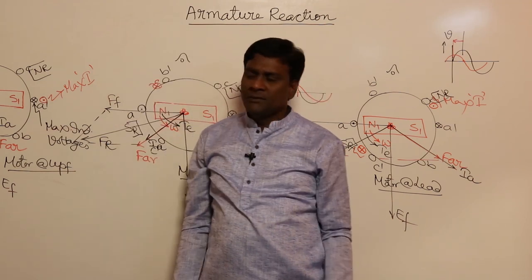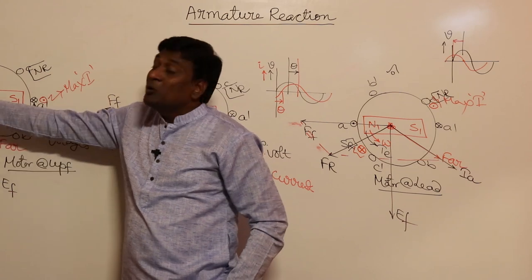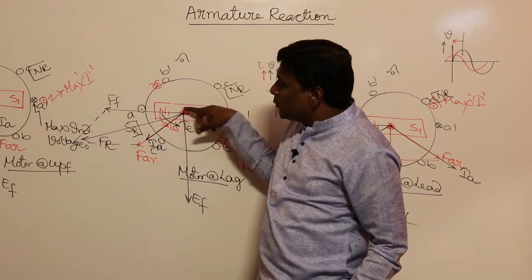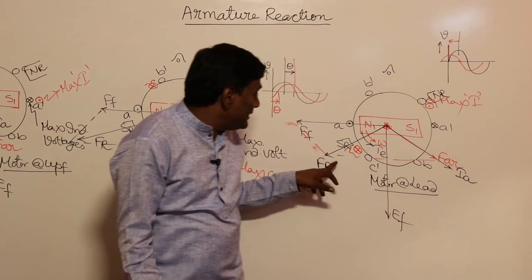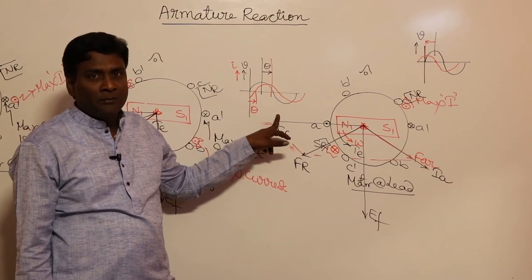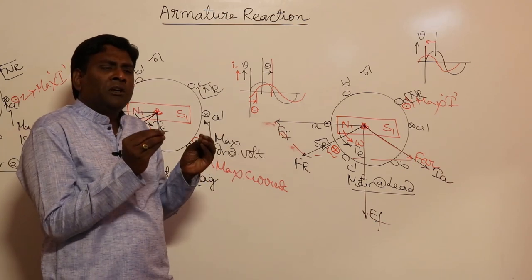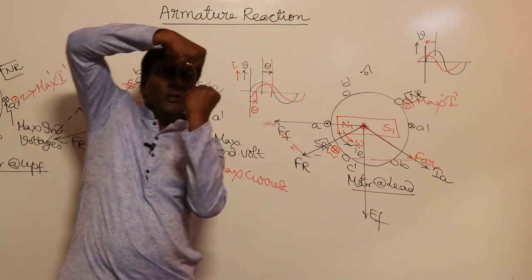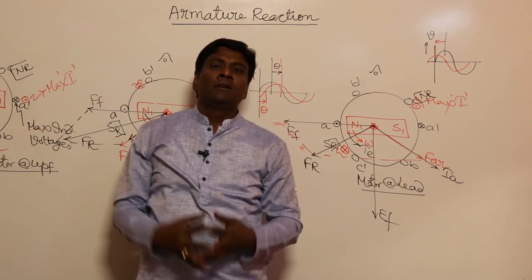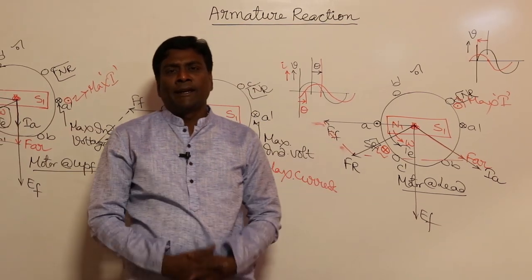The final conclusion: in an alternator, the field pole leads the resultant pole; in a motor, the field pole lags behind the resultant pole. In all our motor analyses — unity, lagging, and leading power factor — the resultant was leading and the field pole was lagging behind, confirming motor action in every case. We will continue this discussion in the next session.